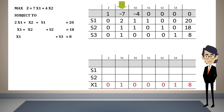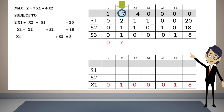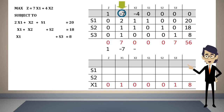For x1 to be basic in the third row, its coefficient in that row must be one and must have zero coefficients in all other rows. This means the values of minus seven, two, and one in that column must be transformed to zeros. To convert minus seven to zero, we multiply the pivot row by seven and add it to the original row. The result is placed in the objective function row of the second table: 0+1, 7−7, 0−4, 0+0, 0+0, 7+0, and 56+0.